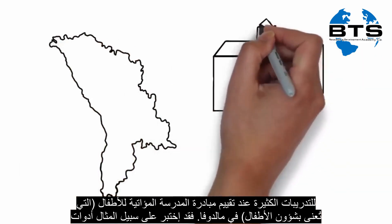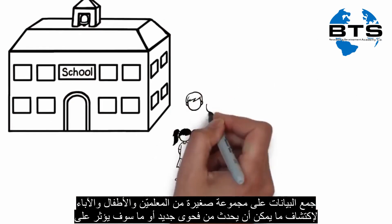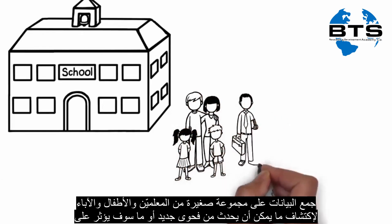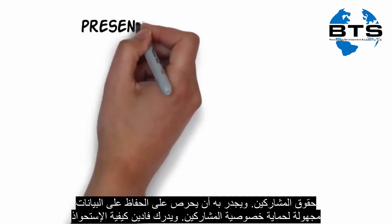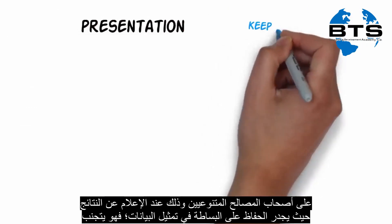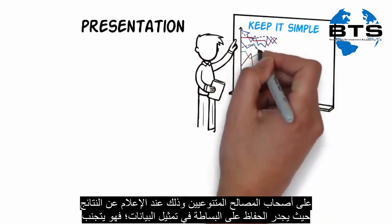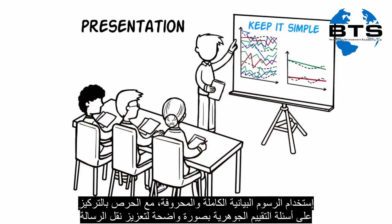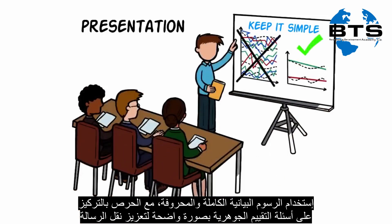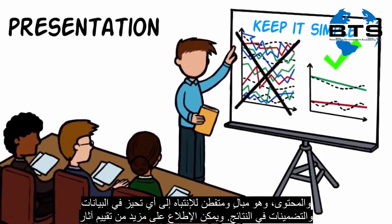Vadim engages in many best practices when evaluating the Child-Friendly School Initiative in Moldova. For example, he first tests his data collection tools on a small group of teachers, children, and parents to find out whether they might be causing a nuisance or affecting participants' rights. He also makes sure that all data collection is anonymous to protect the confidentiality of participants. When reporting his findings, Vadim knows that to engage a variety of stakeholders, the representation of data should be kept simple. He avoids complicated or distorted graphs and focuses on the key evaluation questions with clear visualizations to strengthen the message, while noting any bias in the data and its implications for the findings.